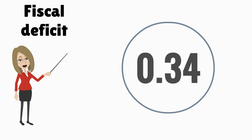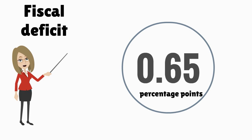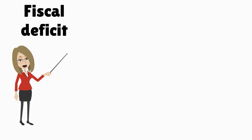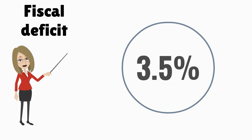Since the government's overall expenditure will increase, its fiscal deficit — the difference between what it earns and spends — will also widen by 0.65 percentage points. This may make an impact on the deficit reduction target of 3.5 percent for the next financial year 2016-17.